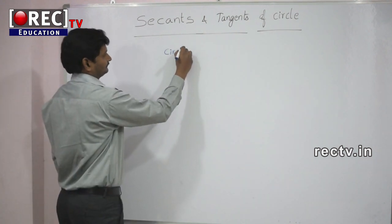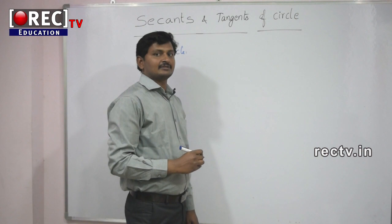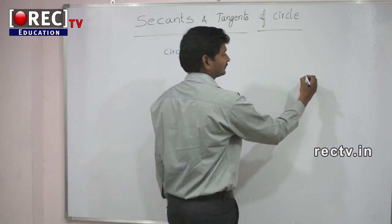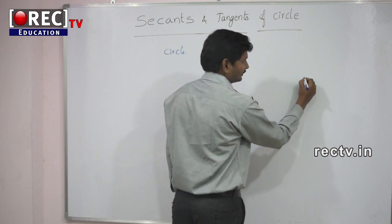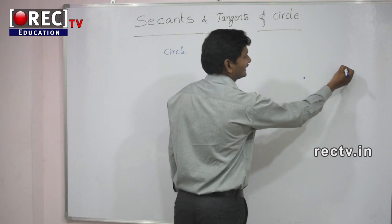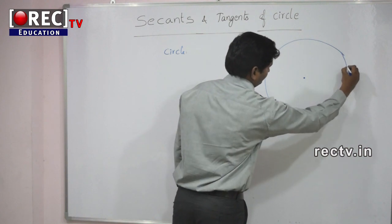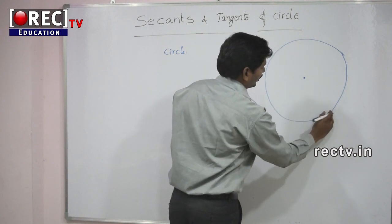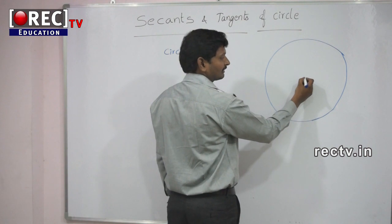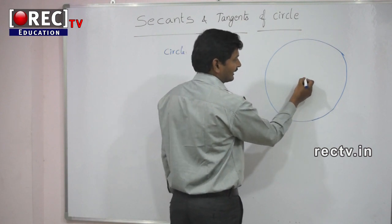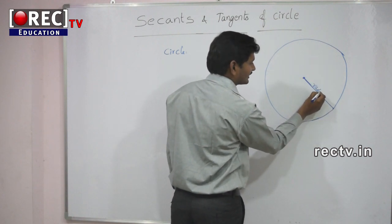Circle definition. The locus of a point which is at a fixed distance from a fixed point is called a circle. We take a fixed point, and all the points which are at equal distances from this point form the circle. All the points on this circle are equidistant from this fixed point. The fixed point is called the center of the circle, and the fixed distance from this fixed point to any point on the circle is called the radius of the circle.